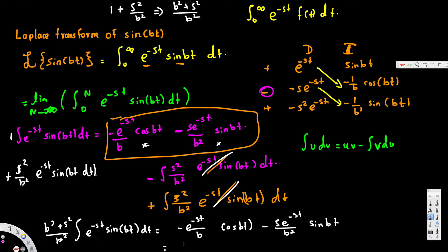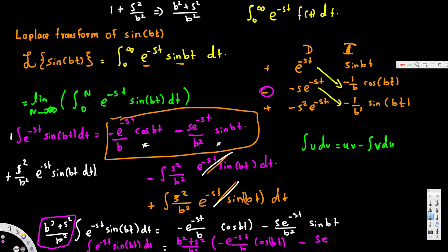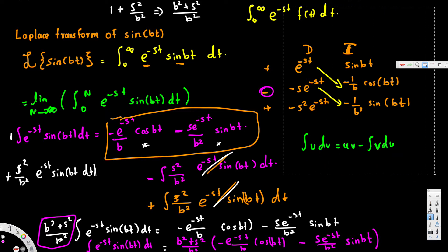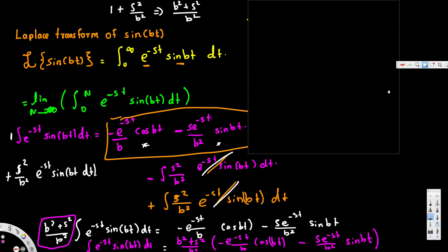The integration is already expressed, so to isolate the integral we divide both sides by b squared plus s squared over b squared — equivalently multiplying by its reciprocal b squared over b squared plus s squared. So the integral of e to the negative st sin(bt) dt equals b squared over b squared plus s squared, multiplied by the expression on the right side.